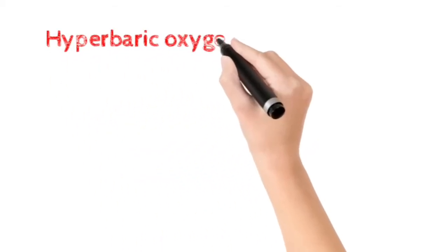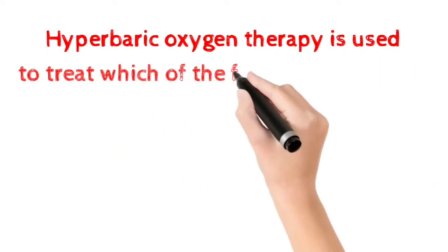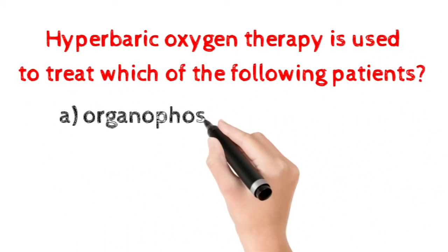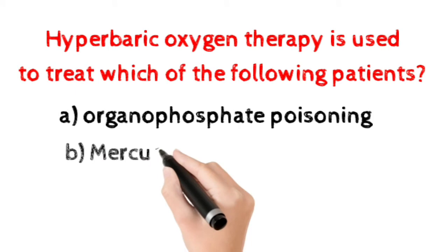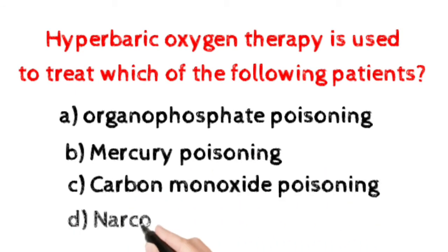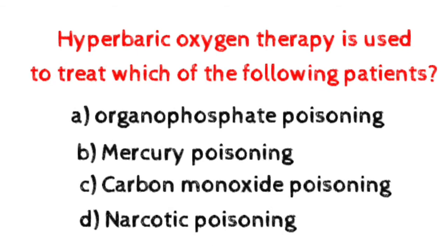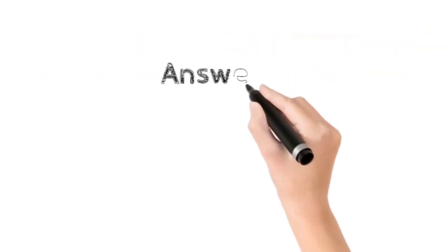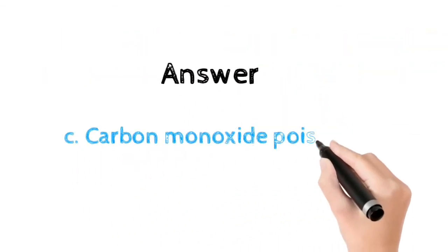Number two: Hyperbaric oxygen therapy is used to treat which of the following patients? Option A: organophosphate poisoning. Option B: mercury poisoning. Option C: carbon monoxide poisoning. Option D: narcotic poisoning. Here the correct answer is option C, carbon monoxide poisoning.